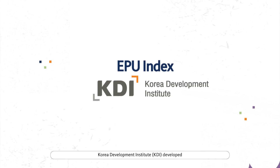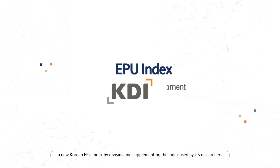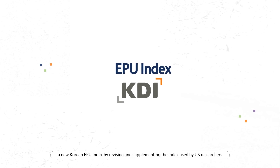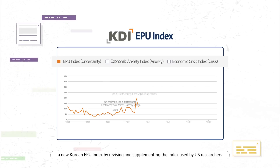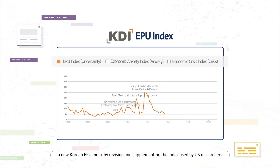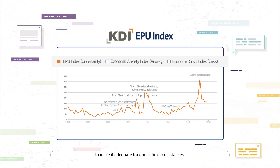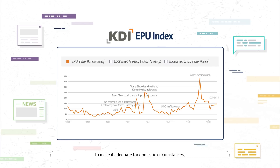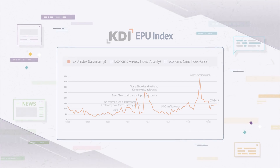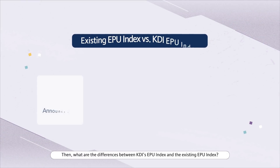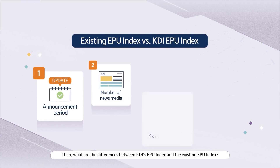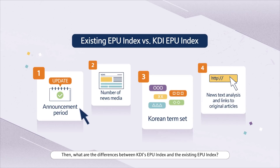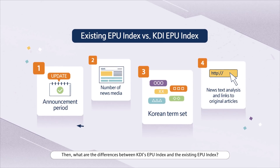The Korea Development Institute developed a new Korean EPU Index by revising and supplementing the index used by U.S. researchers to make it adequate for domestic circumstances. Then, what are the differences between KDI's EPU Index and the existing EPU Index?